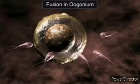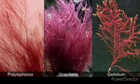Sexual reproduction is oogamous and accompanied by complex post-fertilization developments. The common members are Polysiphonia, Porphyra, Gracilaria, and Chylidium.